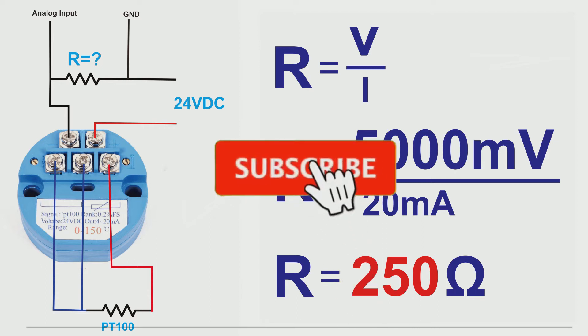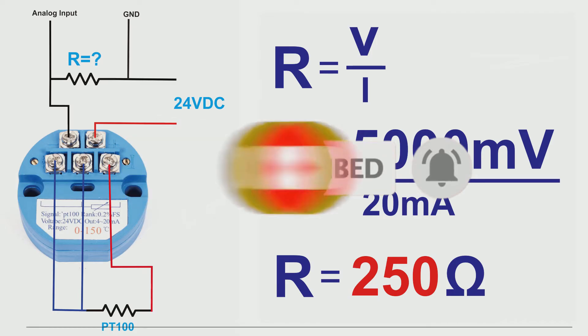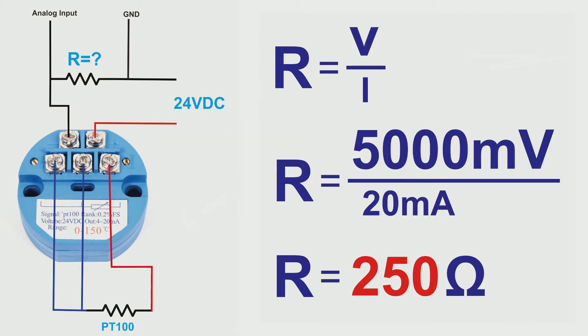Wait, before we continue the video, consider to subscribe and tap the bell so you won't miss new videos and will make us happy. And it's equal to 250 ohms. So the ideal resistance to use is 250 ohms.